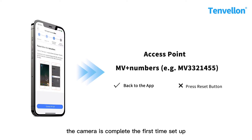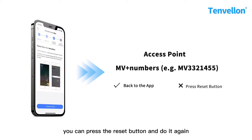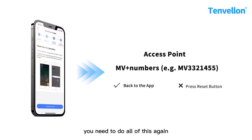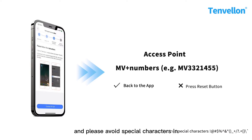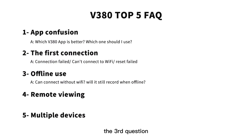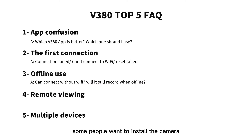Follow the next steps to let the camera connect to the Wi-Fi network, and after that the camera completes the first-time setup. If you make any mistake during the process, you can press the reset button and do it again. If you want the camera to connect to a different network in the future, you need to do all of this again. Please avoid special characters in the Wi-Fi name and password during setup, otherwise the connection might fail.